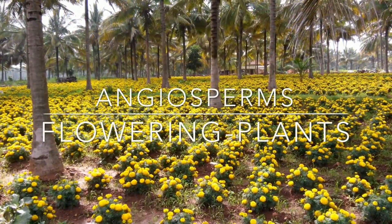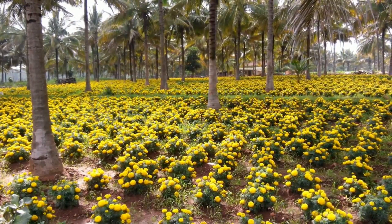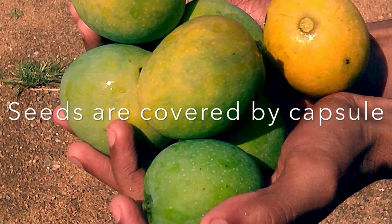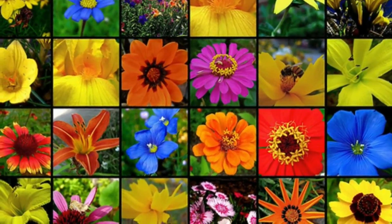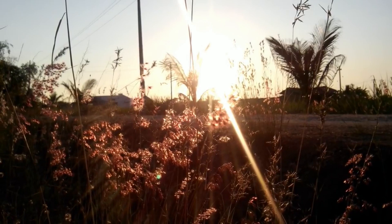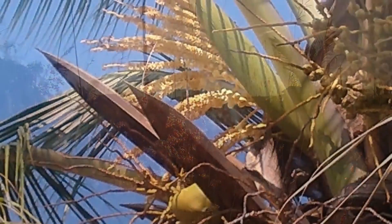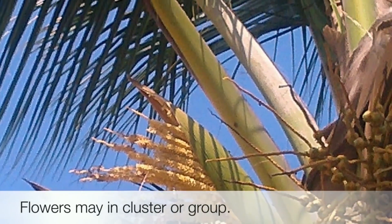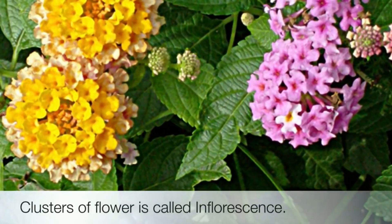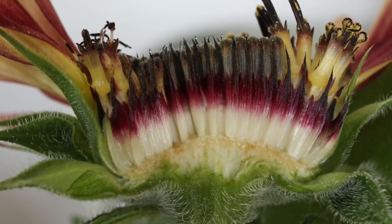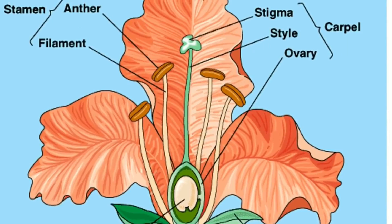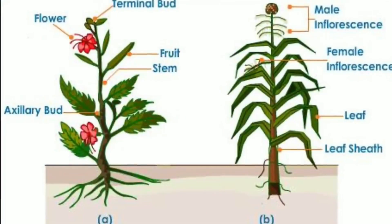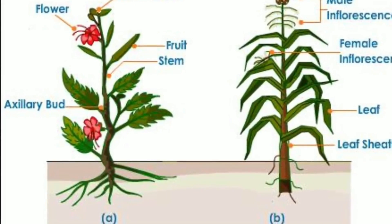The highest classification of the plant kingdom is angiosperms, also commonly known as flowering plants. Here, the seeds are covered by a capsule commonly called fruit. In angiosperms, flowers are the reproductive structure of the plant body. Flowers may be single or in a cluster. A special branch which bears a cluster of flowers is commonly called inflorescence. On the basis of seed cotyledons, angiosperms can be classified into two types: monocotyledonous and dicotyledonous.